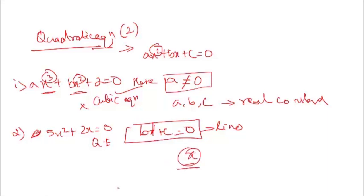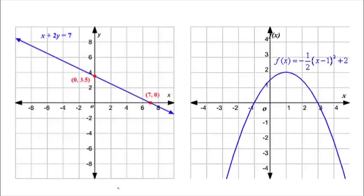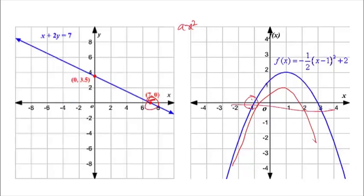Before moving on, I would like to show you how a quadratic equation is represented on a graph. A quadratic equation has 2 solutions because it has a power of 2. A linear equation cuts the x-axis only once, giving one solution, whereas a quadratic curve cuts the x-axis at two points, giving two solutions.